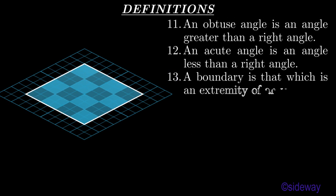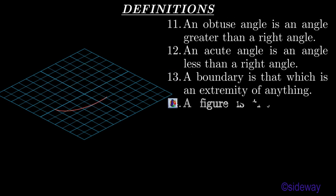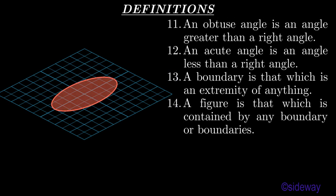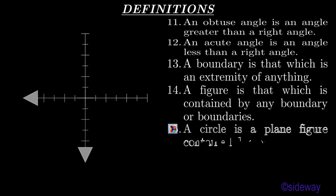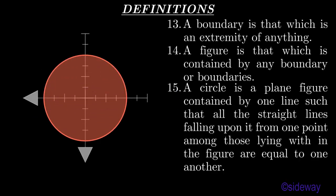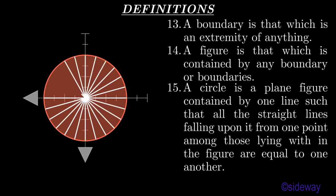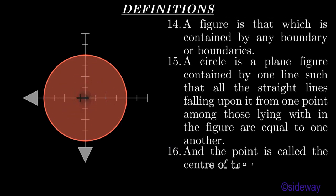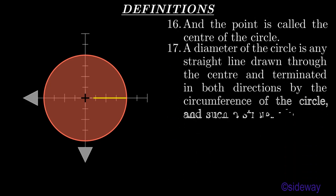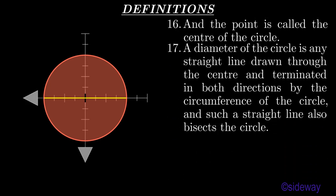A boundary is an extremity of anything. A figure is that which is contained by any boundary or boundaries. A circle is a plain figure contained by one line such that all the straight lines falling upon it from one point among those lying within the figure are equal to one another. A diameter of the circle is any straight line drawn through the center and terminated in both directions by the circumference of the circle, and such a straight line also bisects the circle.